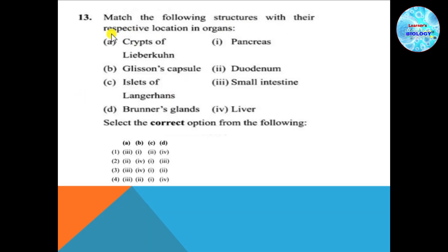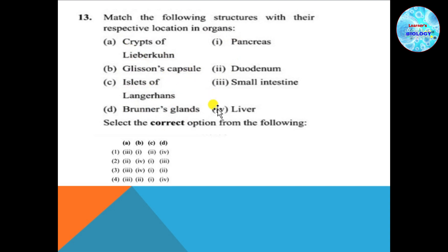Question number 13: Match the following structure with the respective location in organ. Crypts of Lieberkühn — small intestine (A-3). Glisson's capsule — liver (B-4). Islets of Langerhans — pancreas, which secrete insulin (C-1). Brunner's glands — duodenum (D-2). So the correct option is A-3, B-4, C-1, D-2 — that is option number 3.